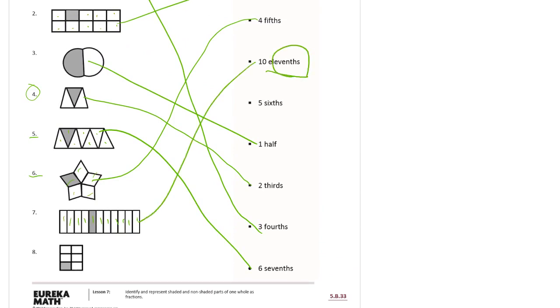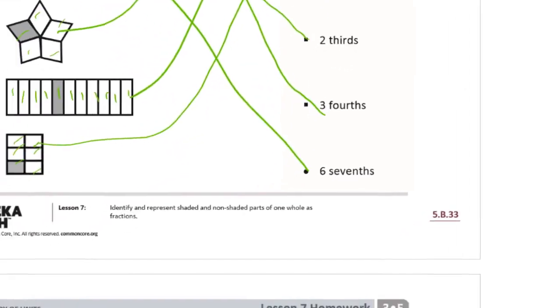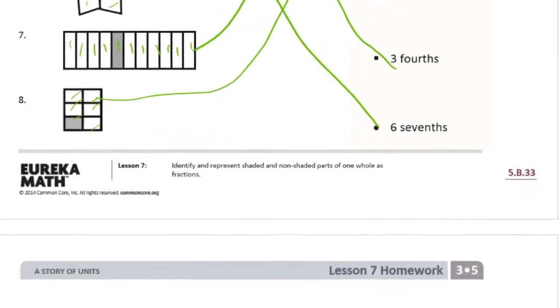That one's going to match up. And then the last one we have sixths. 1, 2, 3, 4, 5, 6 equal parts. 1 sixth is shaded in. 5 sixths are not. So there's my 5 sixths. I'll zoom back in so we can go to the second page.